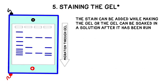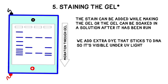The final step is staining, where we add additional dye that sticks to the DNA bands so that we can see them. The stain can be added while making the gel, or the gel can be soaked in a solution after it's finished running. Remember that the loading dye just shows you how fast your samples are moving, so you can stop the reaction at the right time. It doesn't actually make the DNA itself visible.